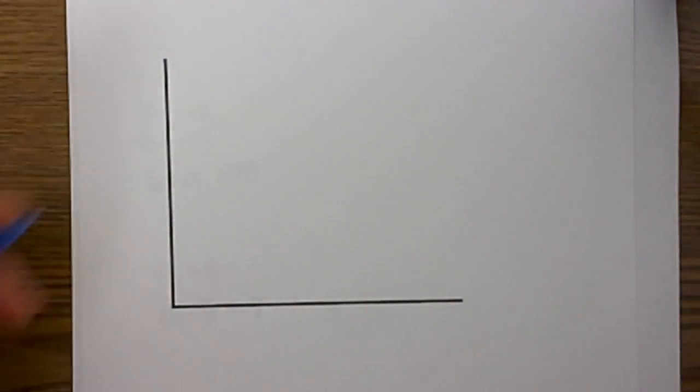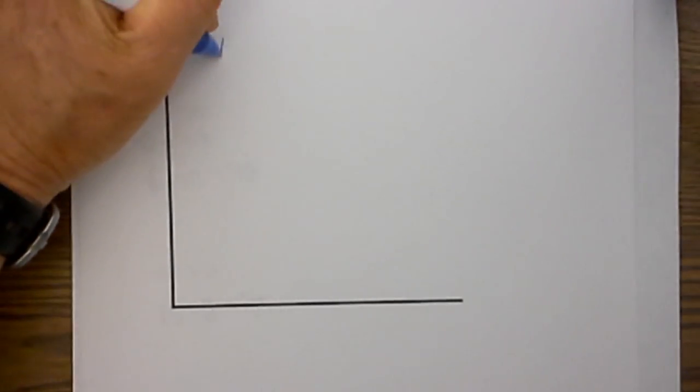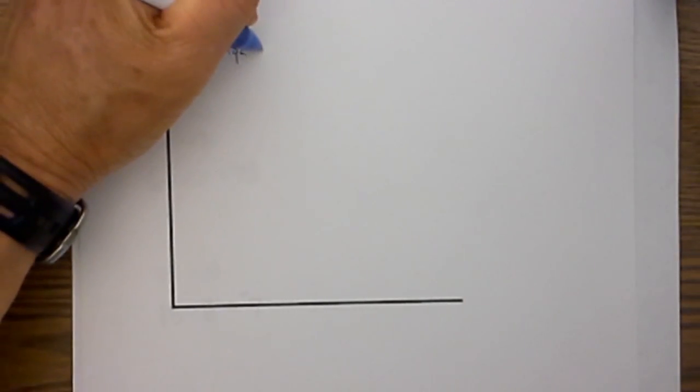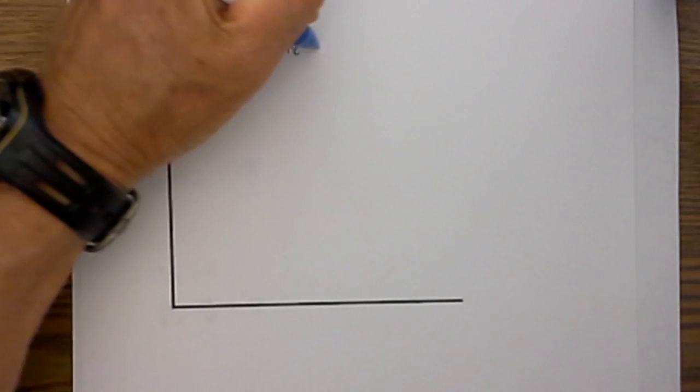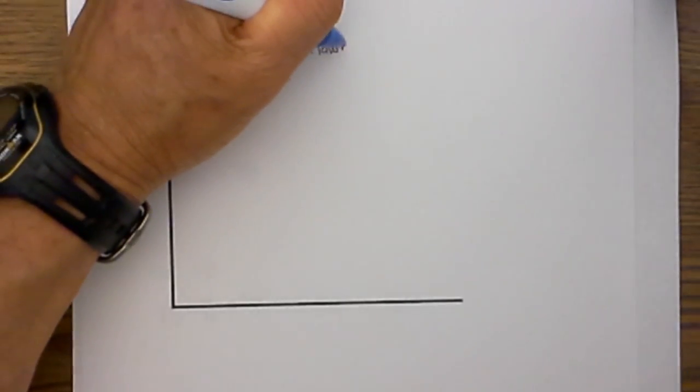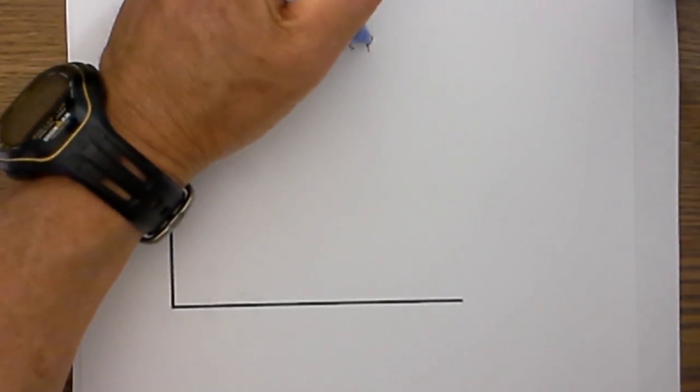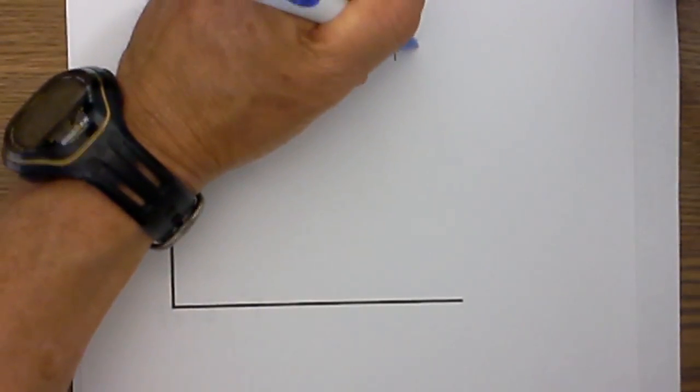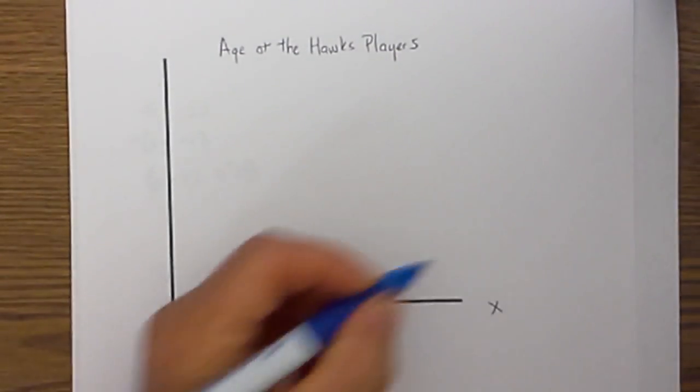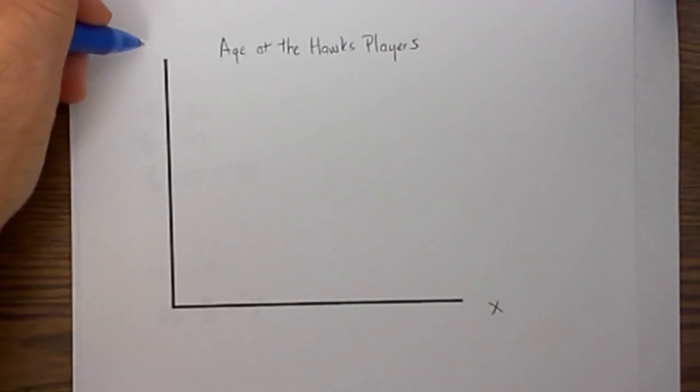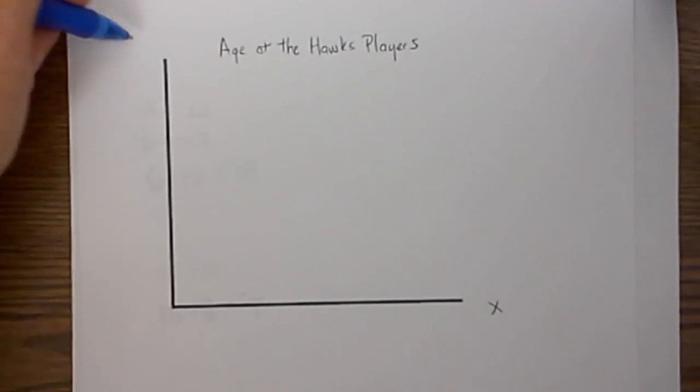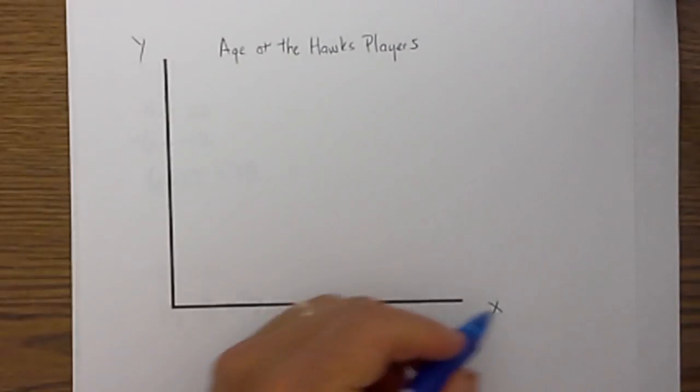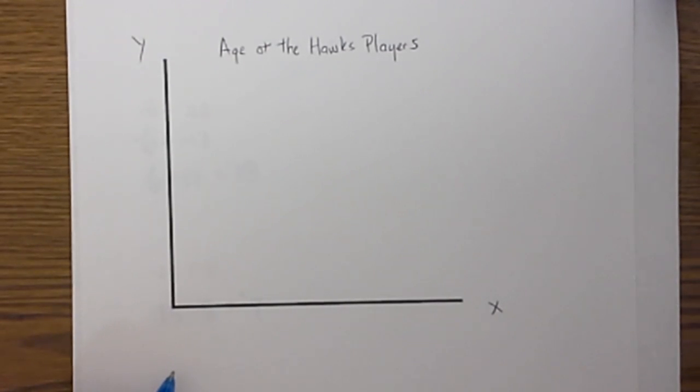The title is, let's title it, the age of the hawks players. And then the x axis, remember x to the left, y high to the sky, so the x axis will be the intervals.